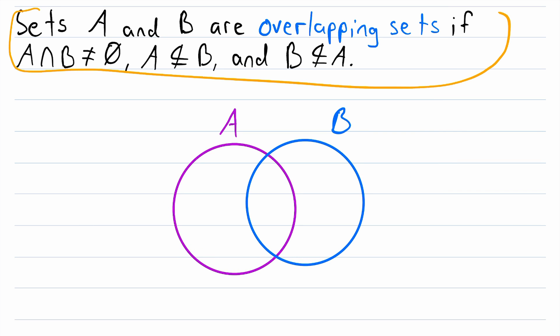So here is our definition, let's read it one more time. Sets A and B are overlapping sets if A intersect B is not equal to the empty set, which remember means they have to have some elements in common, A is not a subset of B, and B is not a subset of A.